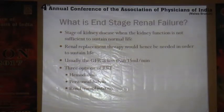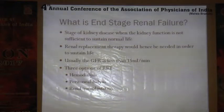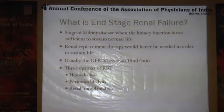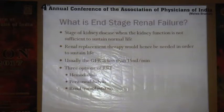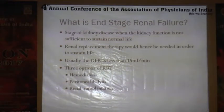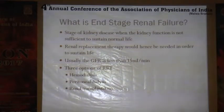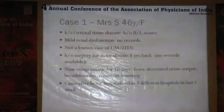End-stage renal disease is when the stage of kidney disease is not sufficient to maintain life as a whole, requiring renal replacement therapy. Usually persons will have GFRs less than 15 before requiring dialysis. There are three options: hemodialysis, peritoneal dialysis, and renal transplantation.